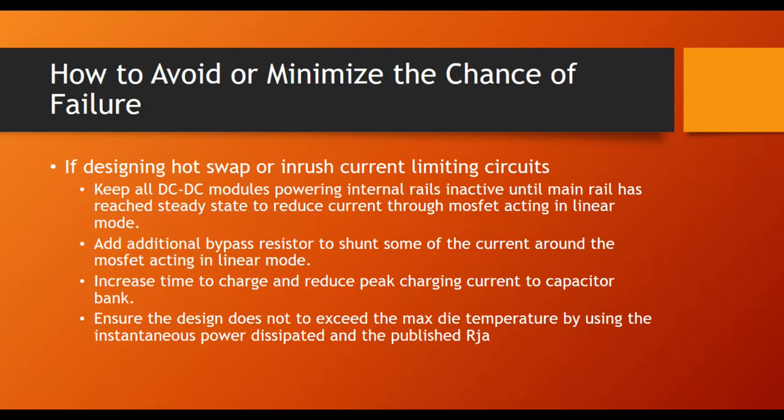So when you're designing with hot swap or inrush current limiting circuits, some of the other things that you can do is make sure that whatever is on the other side of the switches that you're using, be it DC to DC modules or whatever, you should try and keep them disabled until the rails have stabilized. That will prevent current spikes during the inrush period.